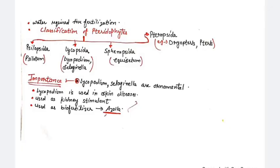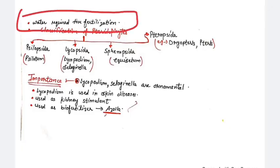Water is very important for fertilization in pteridophytes. Spores are dispersed through air, but the male gametes particularly require water to travel and cause fertilization.